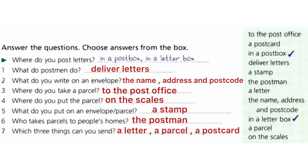The answers: 1. What do postmen do? — Deliver the letters. 2. What do you write on an envelope? — The name, address, and postcode. 3. Where do you take a parcel? — To the post office. 4. Where do you put the parcel? — On the scale. 5. What do you put on an envelope or parcel? — A stamp. 6. Who takes parcels to people's homes? — The postman. And the last one: which three things can you send? — A letter, a parcel, a postcard.